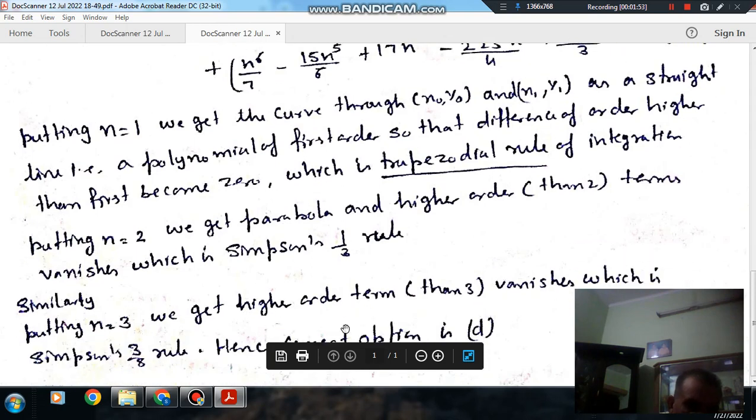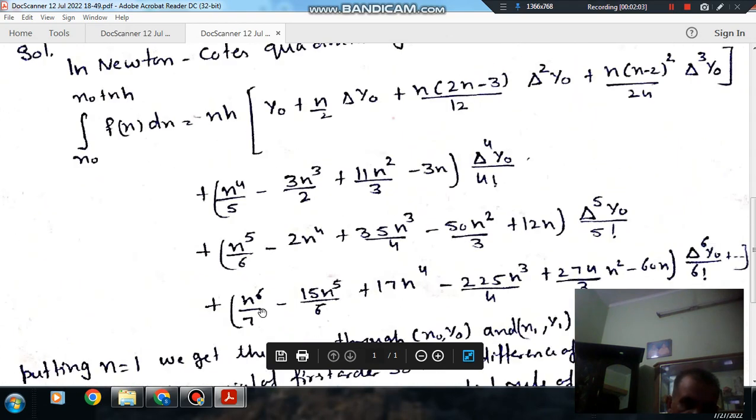And when we put n equals 3, then the term having higher order than 3 will vanish and it will form Simpson's 3/8. So answer is option B.